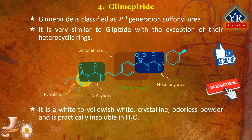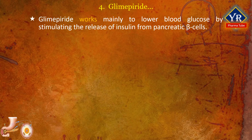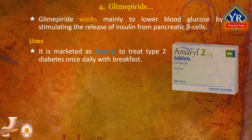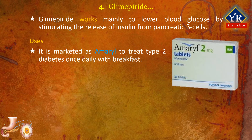Glimepiride is a white to yellowish-white crystalline odorless powder and is practically insoluble in water. Glimepiride works mainly to lower blood glucose by stimulating the release of insulin from pancreatic beta cells. It is metabolized primarily through oxidation of the alkyl side chain of the pyrrolidine with a minor metabolic route involving acetylation of the amine. Its half-life varies from 5 to 9 hours depending on the frequency of multiple dosing.